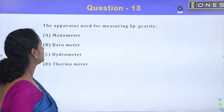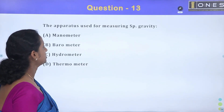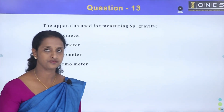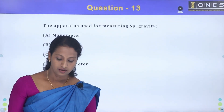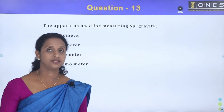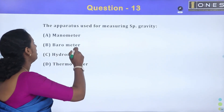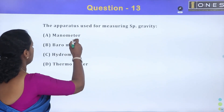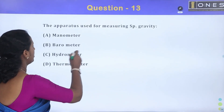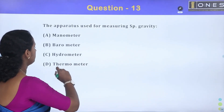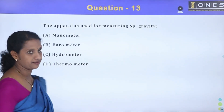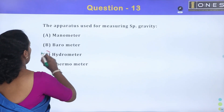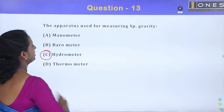The apparatus used for measuring specific gravity. We have four options: manometer, barometer, hydrometer, thermometer. The answer is hydrometer — it measures specific gravity.